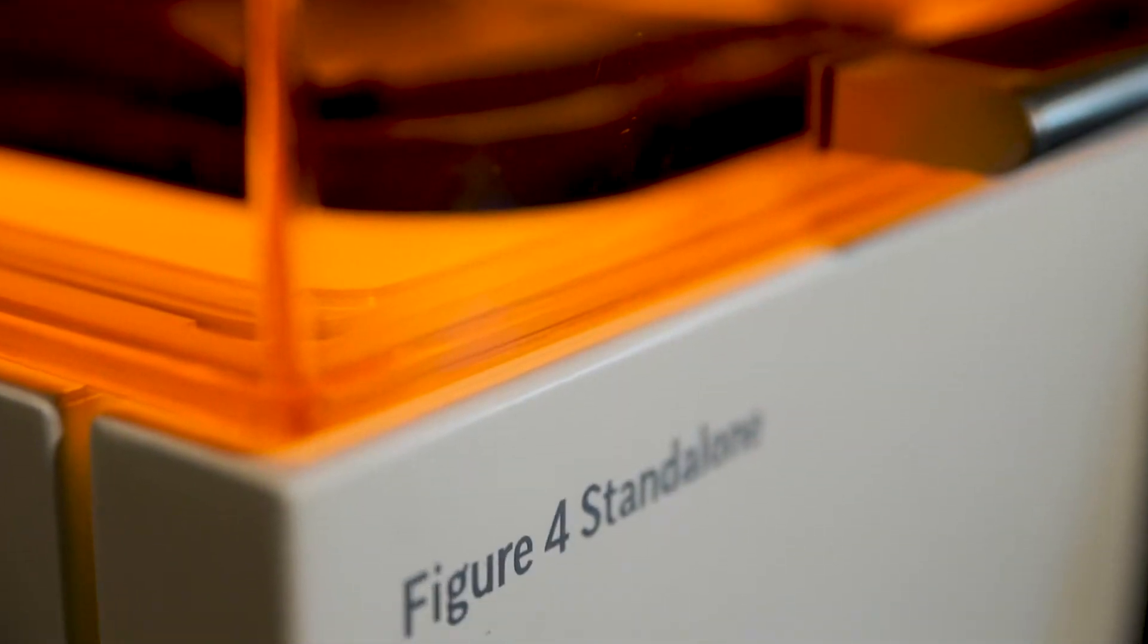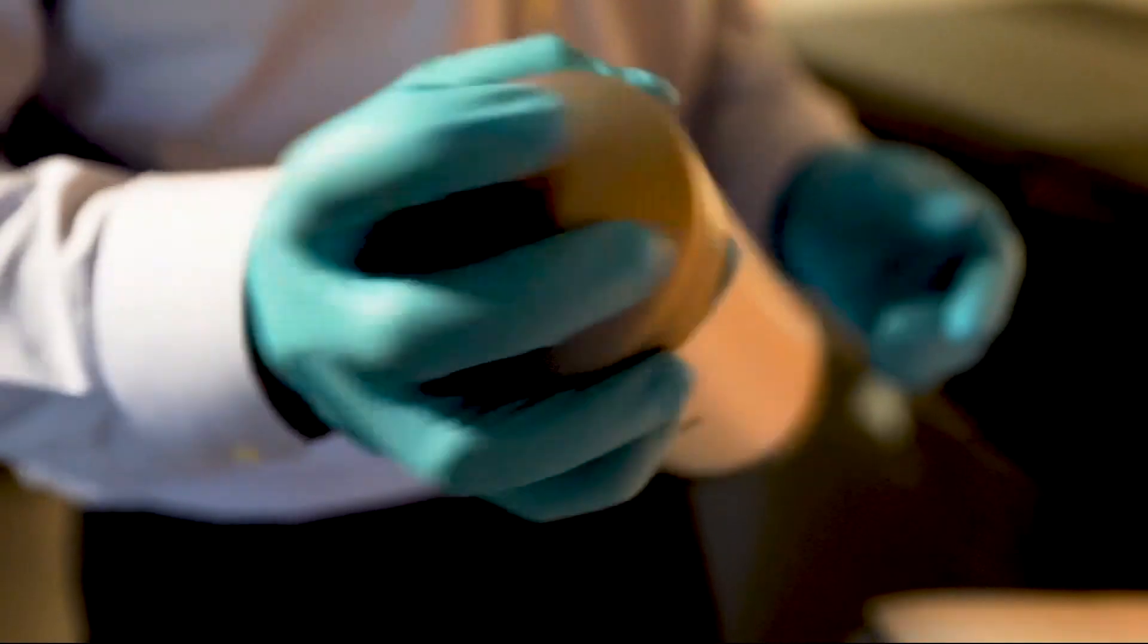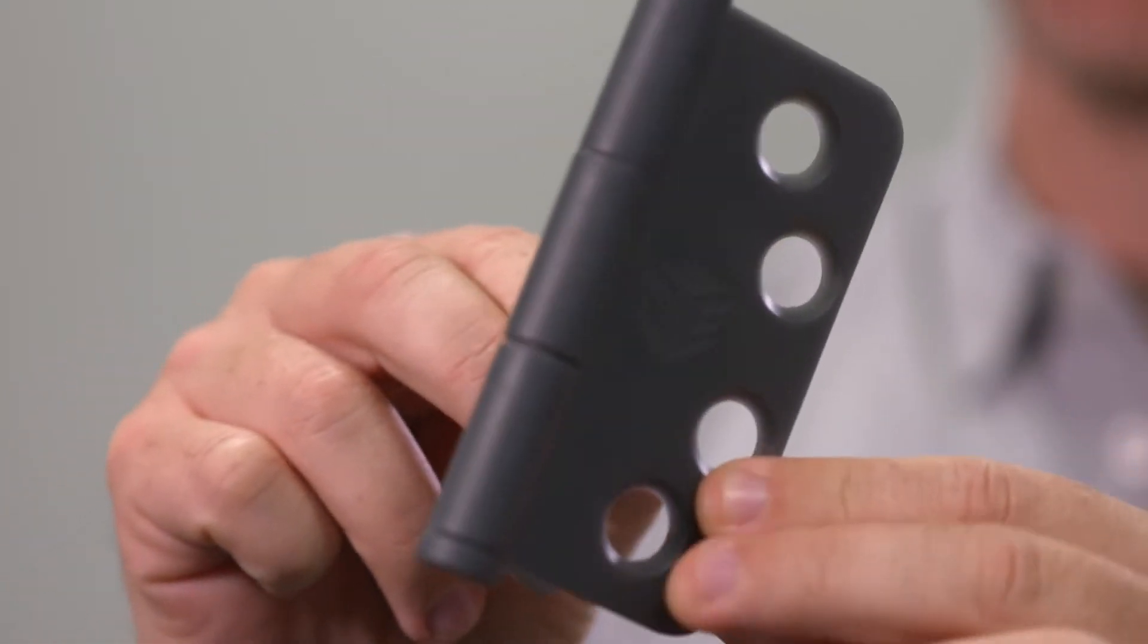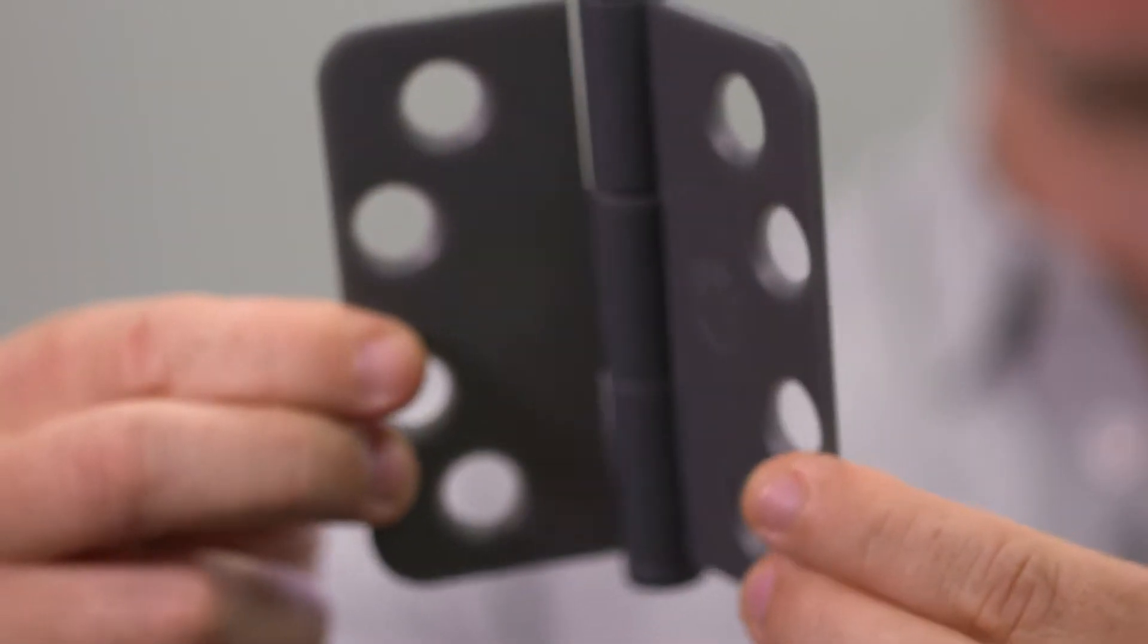I'd like to show you one of the most powerful and cost-effective tools you can use for rapid prototyping today, and that's the Figure 4 standalone 3D printer. What makes this system truly unique is that it's based on non-contact membrane digital light processing technology, which means parts can be created in a range of durable materials at truly remarkable speeds.